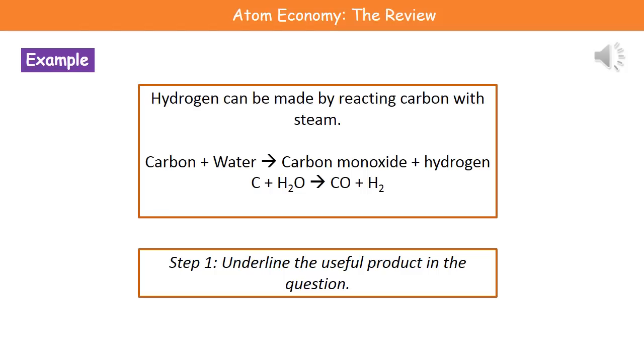What we're going to do now is go through how to carry out this calculation with an example. The example I've given you here is that hydrogen can be made by reacting carbon with steam. They will give you the word equation in your exam: carbon + water → carbon monoxide + hydrogen. C + H₂O → CO + H₂.